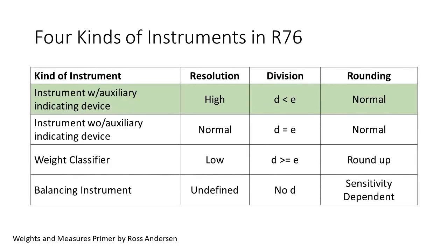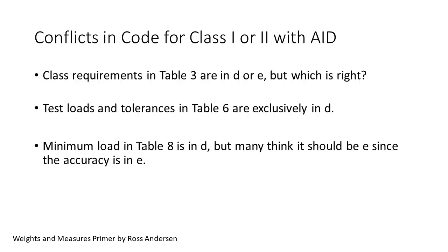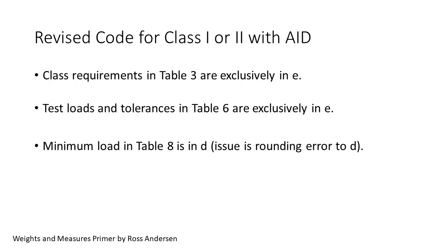Next, we move to the high-resolution instruments. I start with those instruments with the auxiliary indicating device, described in detail in parts 1 and 2. For these instruments, D is smaller than E. We find three of the same conflicts in Table 3 accuracy class, Table 6 tolerances, and Table 8 minimum load. In Table 3 and 6, we are taught to use E, but I submit there's no direction in the code to support this, particularly for tolerances. In Table 8, the minimum load is specified in D, but many believe it should be E, because we also changed from D to E in Tables 3 and 6. The proposed revisions resolve all the questions and conflicts. Class requirements as well as test loads and tolerances are correctly specified in terms of actual weight in E. The minimum load is specified in D for these instruments. This is because minimum load is related to rounding to the scale division D, which is independent of the accuracy in E.